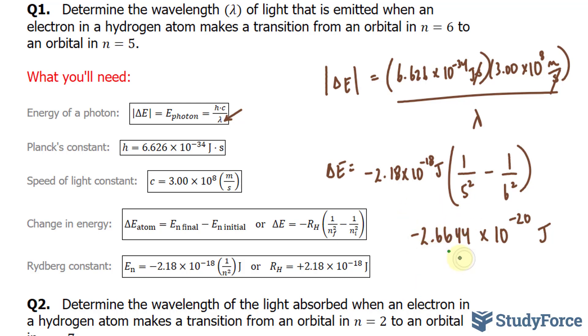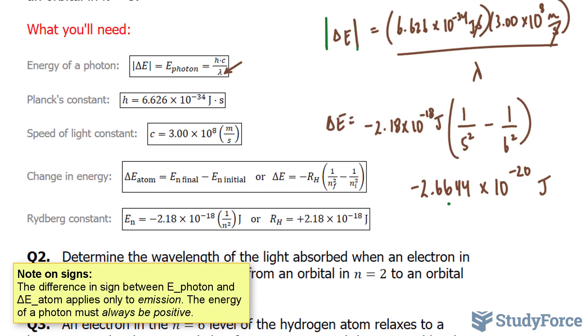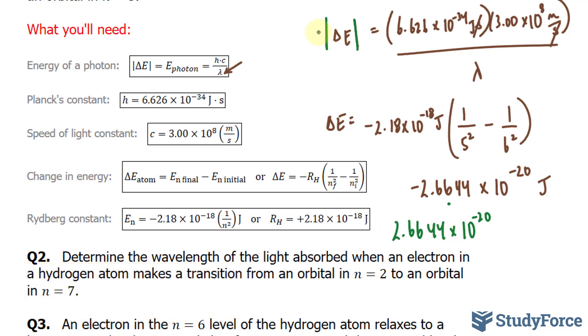Now I'll take this number and place it into here. Notice that it's an absolute. This represents absolute. So we'll just take the magnitude of this number and not the negative. So what we have is 2.6644 times 10 to the power of negative 20. Notice that it became positive and that's what happens when you put a number in this absolute. And that is equal to everything on the right side.